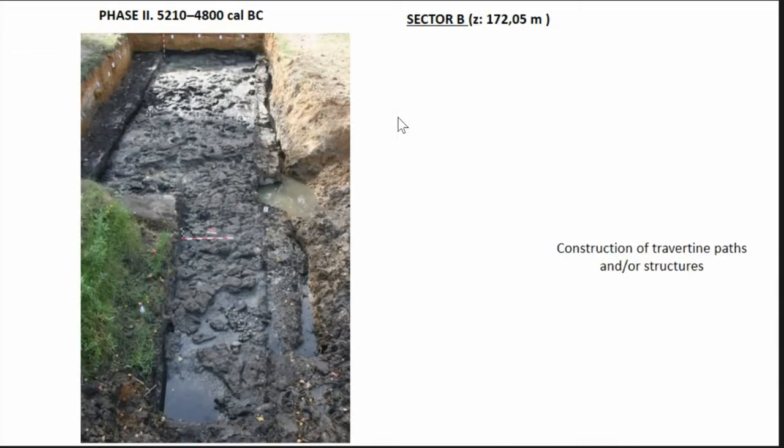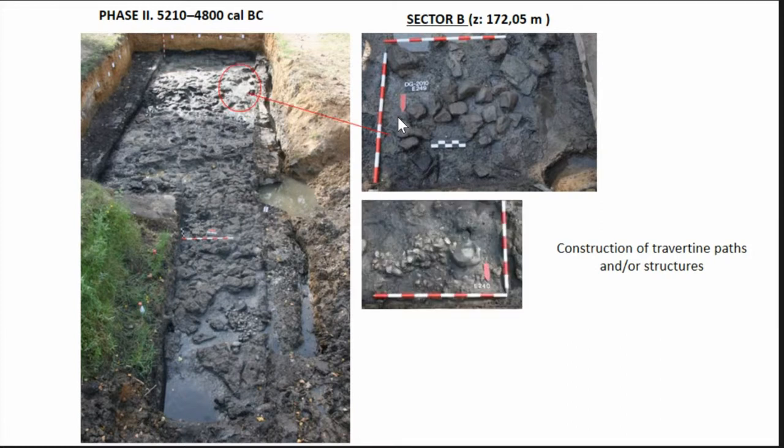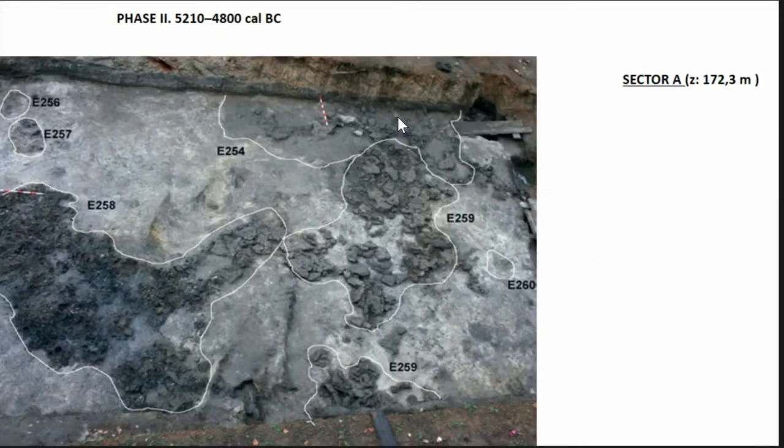The more recent layer was dated at 5,200 to 4,800 and was preserved at all sectors. So we can say that there was no chronological interruption between the two occupation layers. This second layer consisted of trampled paths and associated structures.